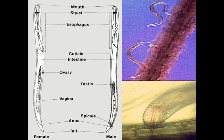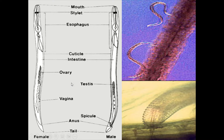You can see male and female nematodes. The mouth, stylet, esophagus, cuticle, intestine, anus, and tail are present in both male and female nematodes, but the sex organs are different. In male nematodes there are testes and spicules, and in female nematodes there are ovaries and vagina.